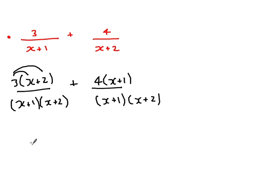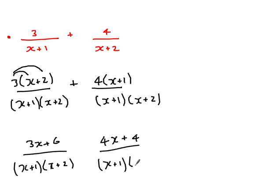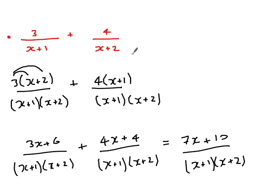My second step is then I need to expand out this bracket. Now, 3 times x is 3x. 3 times 2 is 6. So that's my first one. And then on my second one, 4 times x is 4x. 4 times 1 is 4. And again, I've got the same denominator. And I'm adding all this together. So finally, I've got a 3x and a 4x, which is 7x. A 6 and a 4, which is 10. And that is all over x plus 1, x plus 2. There we go. That's an introduction to algebraic fractions. They do get more complicated, but this is an introduction to the basic idea.